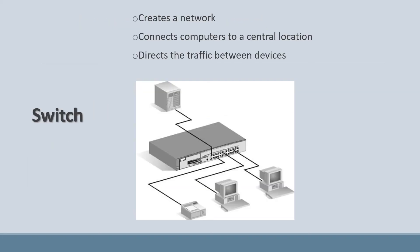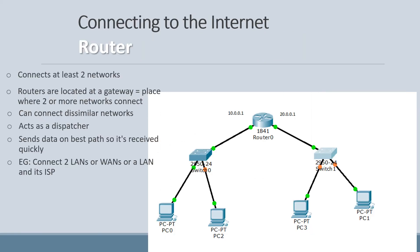A switch creates a network. If you have a classroom at school, there's a switch and all the computers connect to it. It connects all computers to a central location and directs traffic between devices. A router connects at least two networks and is located at a gateway — the place where two or more networks connect. Routers can connect similar networks and act as a dispatcher, sending data along the best path so that it's received quickly.